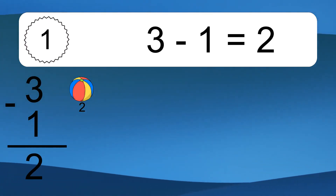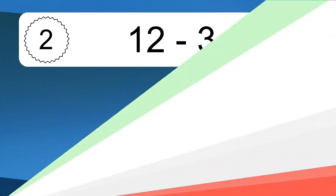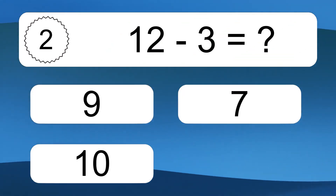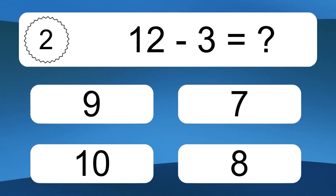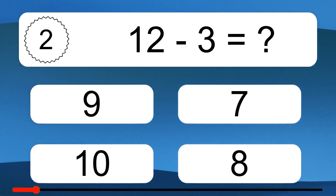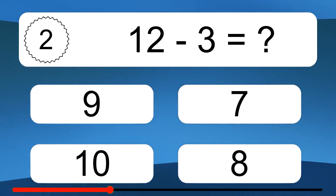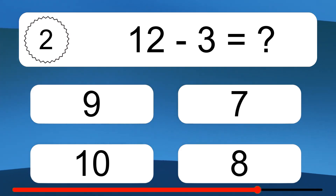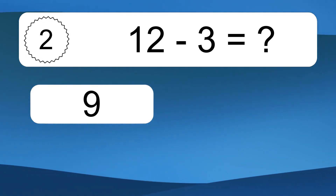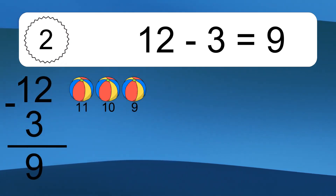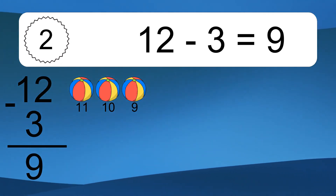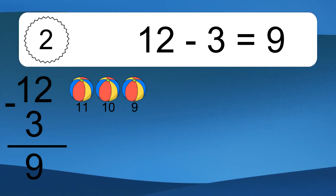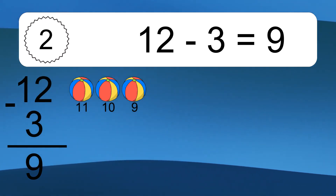Let's count it. 12 minus 3 equals what? 12 minus 3 equals 9. Let's count it: 11, 10, 9.